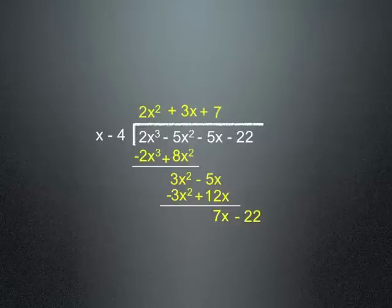So 7 times x is 7x and we're gonna put it right there. And 7x minus 7x is 0. Now we take 7 times negative 4 and we're gonna put it right there. And that would be negative 28. Last time I checked, that's correct.